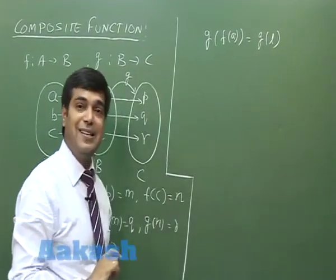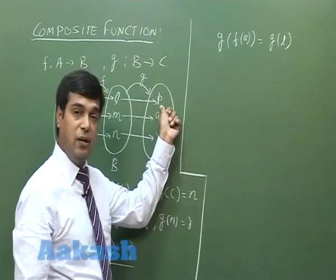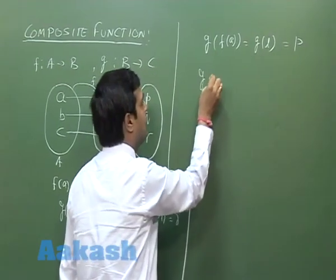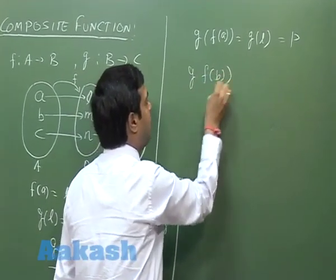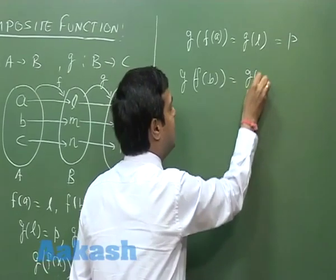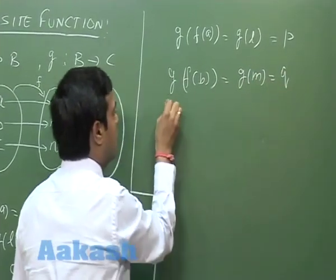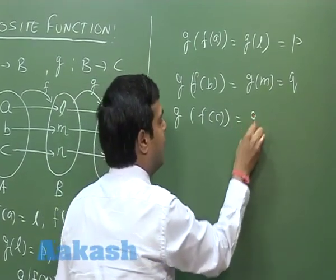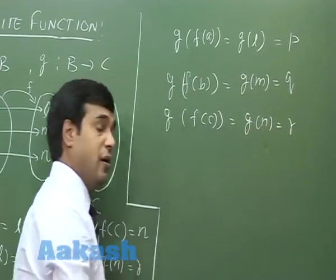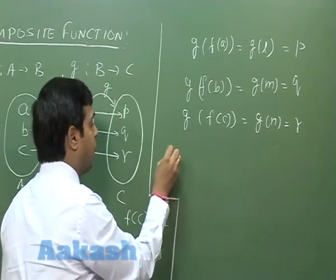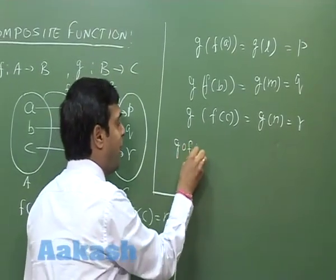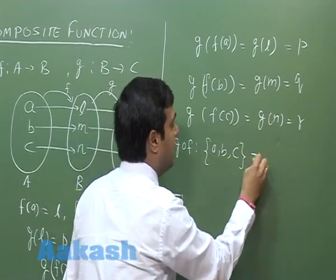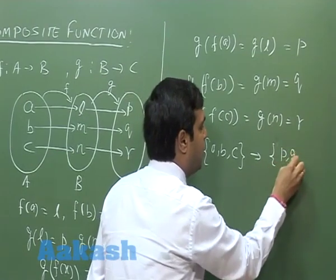Now g(l) is in turn defined as p. So g(f(a)) = p. Similarly, g(f(b)) = g(m) = q, and g(f(c)) = g(n) = r. So we find the composite function g(f) is defined from {a, b, c} to {p, q, r}.